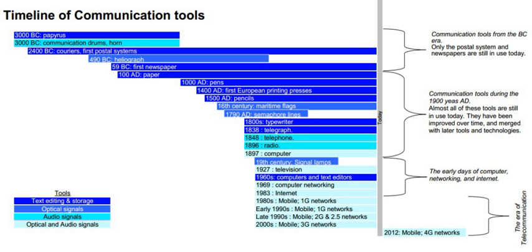20th century – 1920 – Radio station KDKA based in Pittsburgh began the first broadcast. 1925 – John Logie Baird transmits the first television signal. 1942 – Hedy Lamarr and George Antheil invent the frequency-hopping spread-spectrum communication technique.